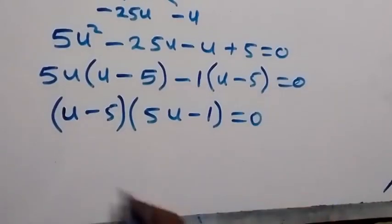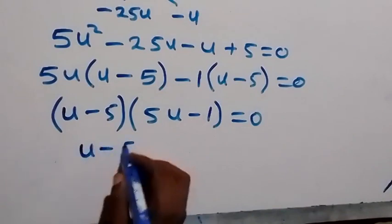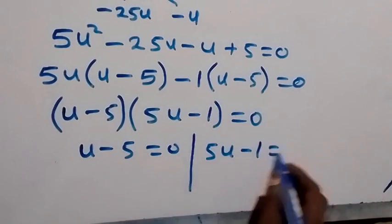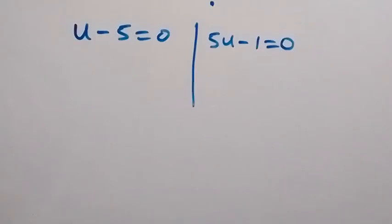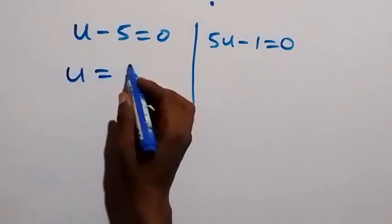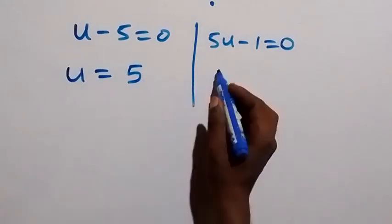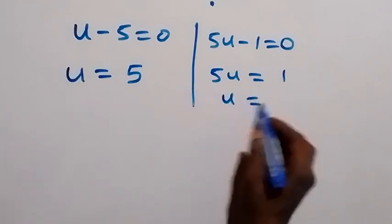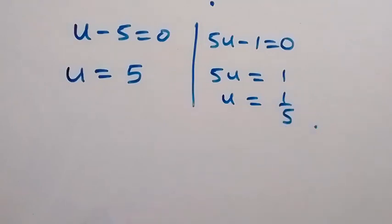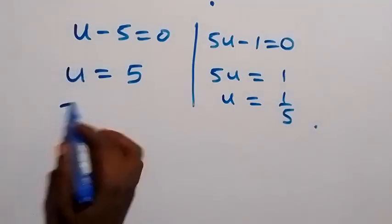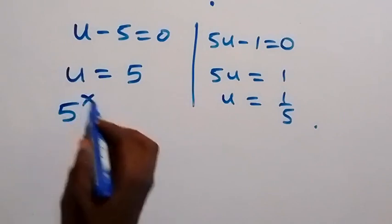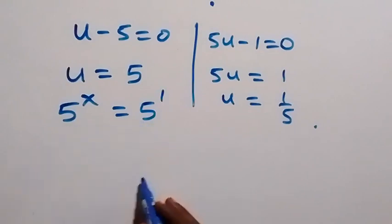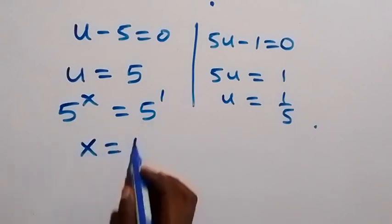So, two possible cases are: u minus 5 equals to 0, or 5u minus 1 equals to 0. From the first case, u equals to 5. On the second side, 5u equals to 1, and dividing both sides by 5, u equals to 1 over 5. Recall that u equals 5 raised to the power x, so when u equals 5, that is 5 raised to the power 1. The bases are the same, so x equals to 1.